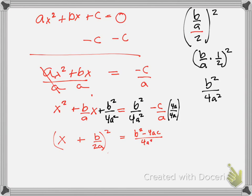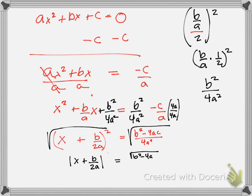What would be my next step? Remember, we're trying to get X alone. We're going to take the square root of both sides. Then we get the absolute value of X plus B over 2A equals the square root of B squared minus 4AC, over the square root of 4A squared. So X plus B over 2A equals plus or minus the square root of B squared minus 4AC, to lose the absolute value.